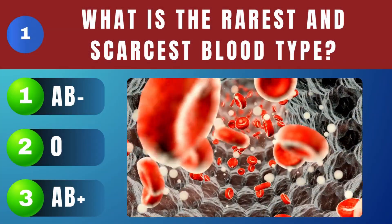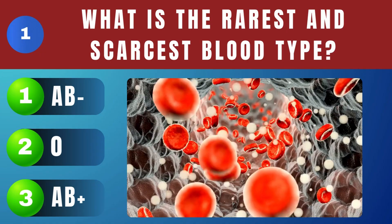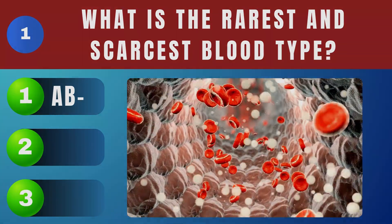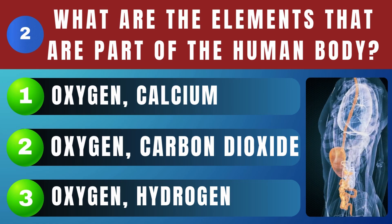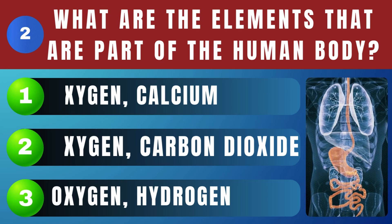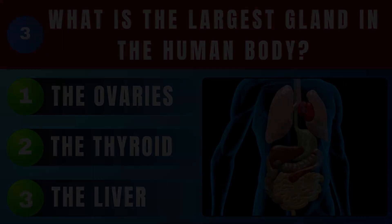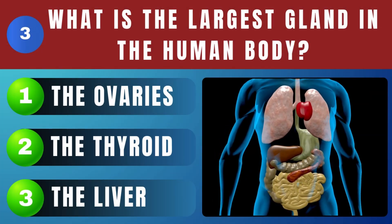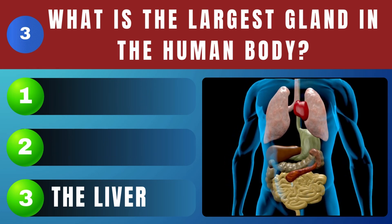What is the rarest and scarcest blood type? B negative. What are the elements that are part of the human body? Hydrogen and oxygen. What is the largest gland in the human body? The liver.